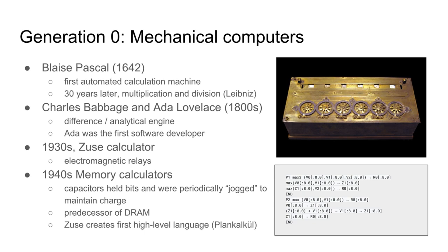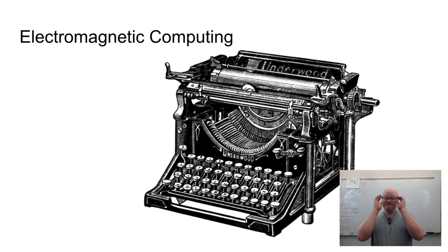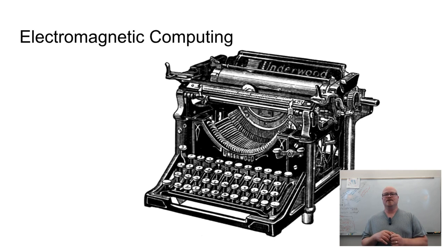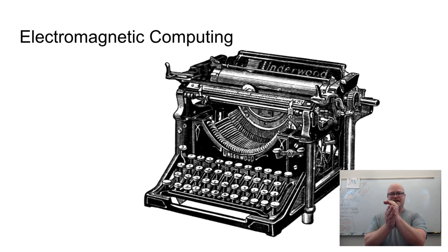Now I want to cover a bit about electromagnetic computing. Before you is a typewriter — a simple mechanical device. To get a letter printed on paper, a human finger exerts force onto one of the keys, that force is transferred along pieces of metal until a little hammer strikes a ribbon impregnated with ink against the paper, leaving the impression of the letter typed.